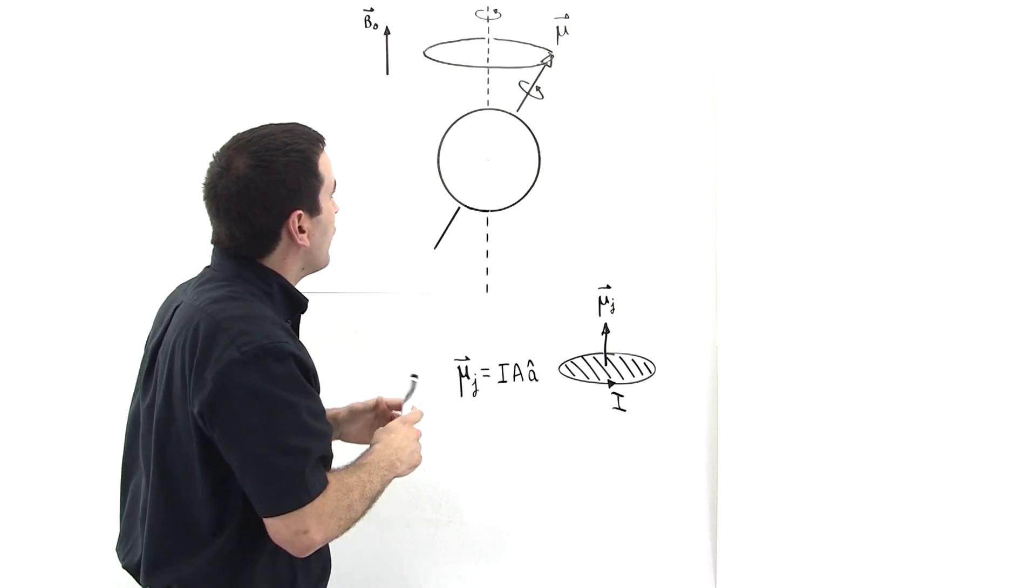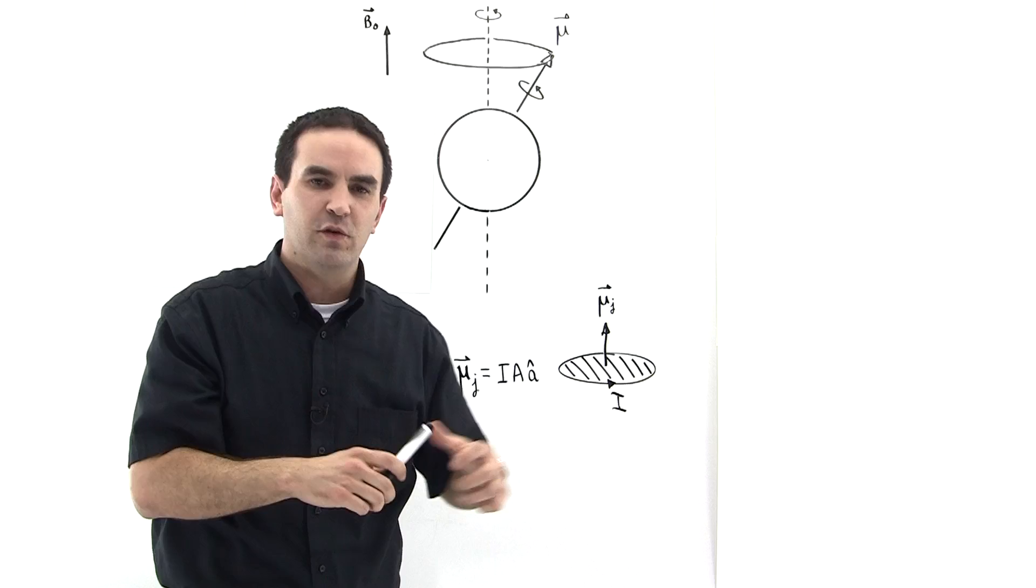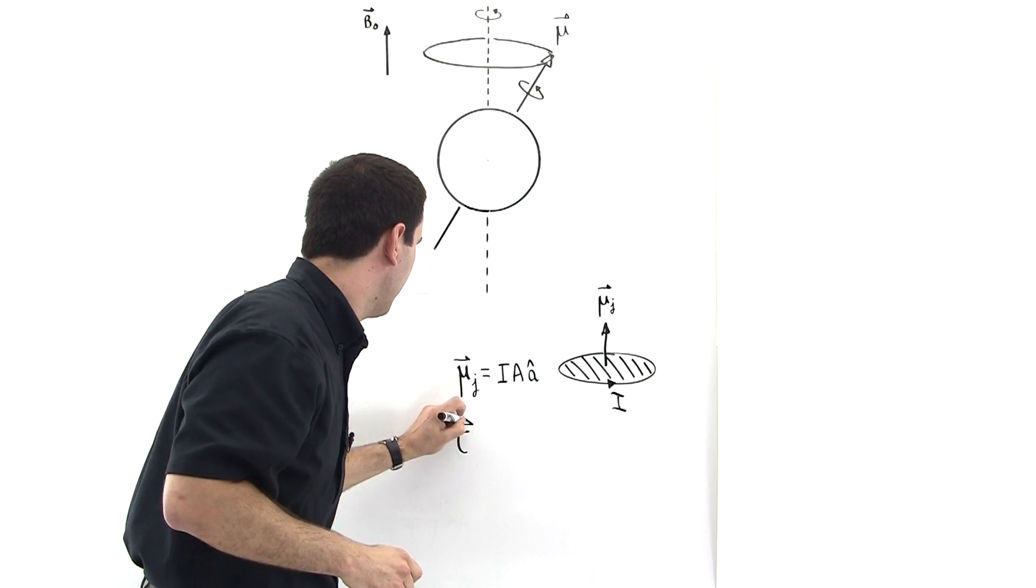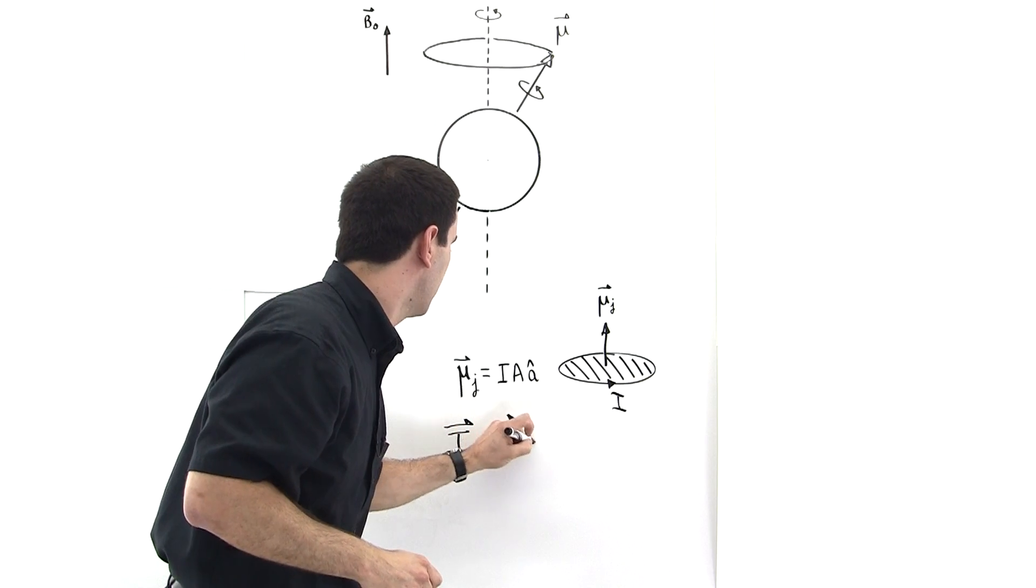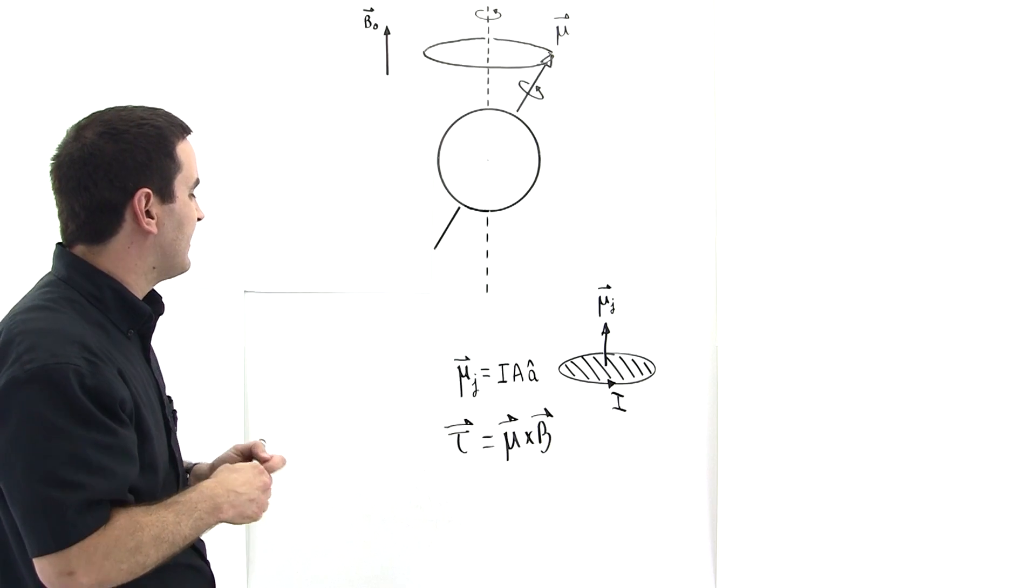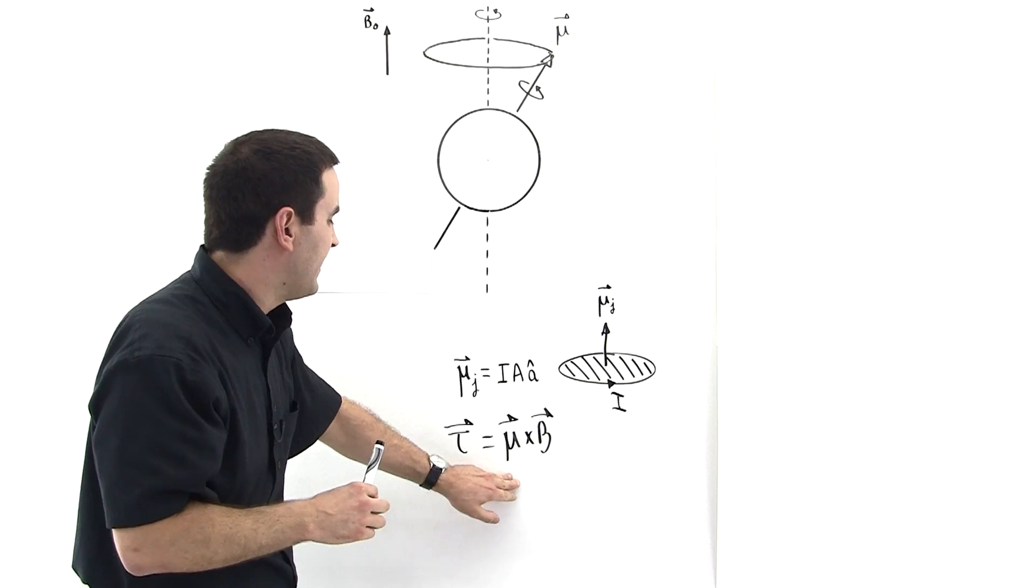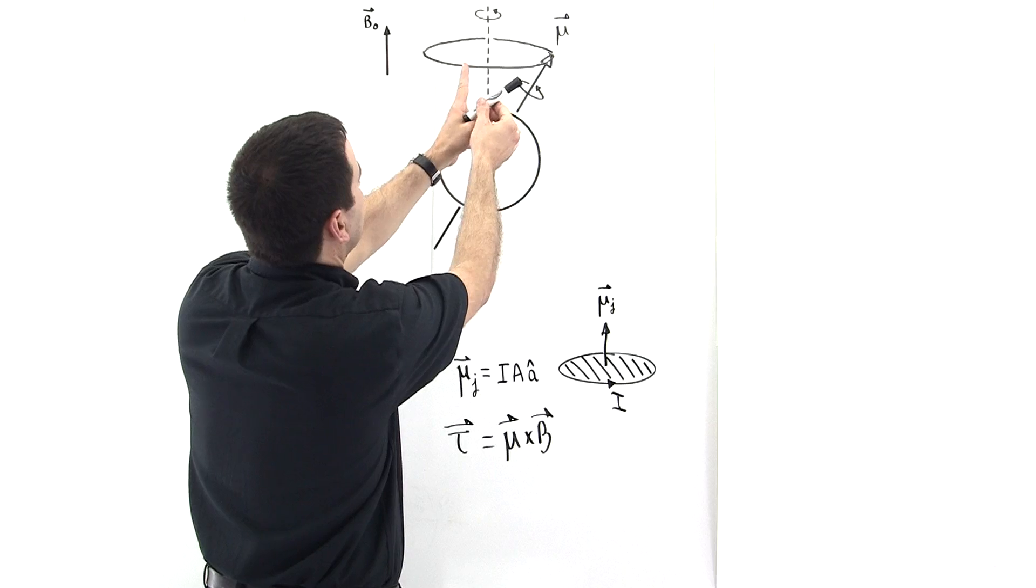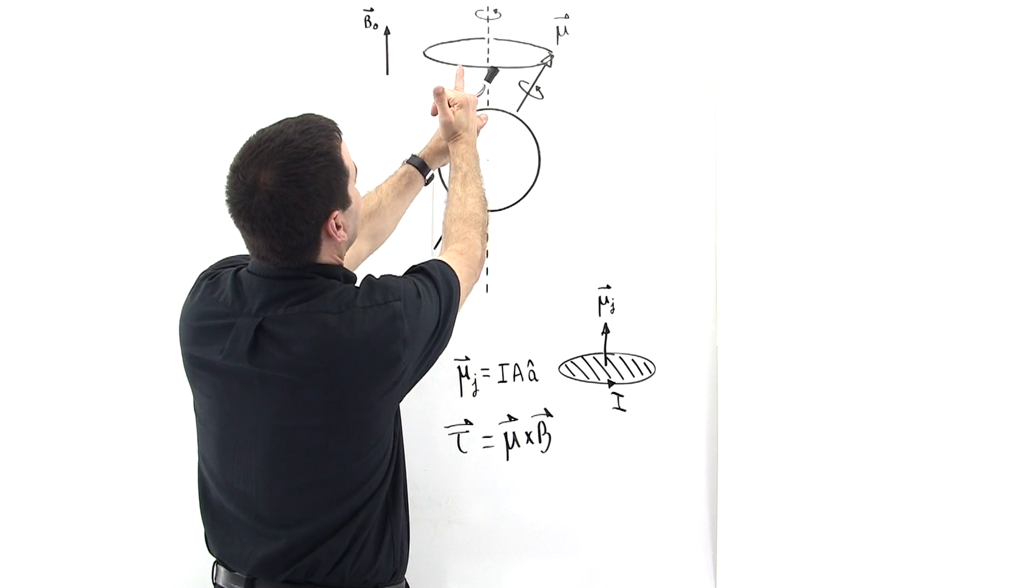Whenever you take a dipole moment and put it in an external magnetic field, it will experience a torque given by the equation τ = μ × B. This says that the magnetic dipole moment will tend to line up with the magnetic field. We cross this into here and get a torque out of the board, which means this thing is going to rotate this way.